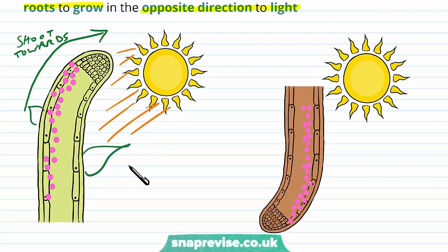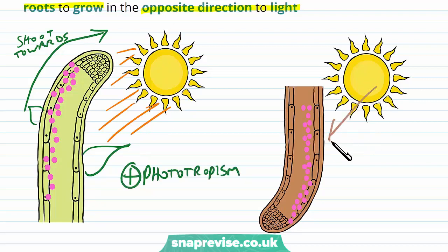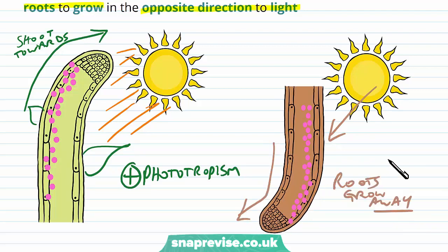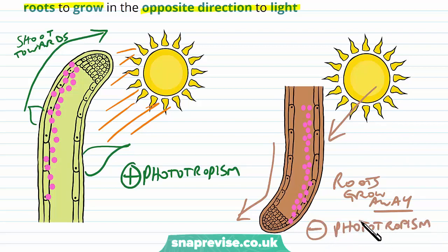This would be positive phototropism. However, down in the roots, the light is still coming from the same direction, but the root grows in the opposite direction. So because they're growing away from the stimulus, this is negative phototropism. Remember, this is still phototropism because it's responding to light — don't get this confused with geotropism, because we're not responding to gravity here, only the sunlight.